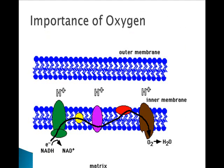Without oxygen, electrons back up the electron transfer chain and no hydrogen gradients form — meaning you get a huge acid buildup. No gradient means no ATP, and complex cells can't survive long without enough ATP. This is actually how cyanide kills you: it prevents oxygen from linking up with those hydrogens, and the acid buildup inside your cells happens so rapidly that it kills you quickly.